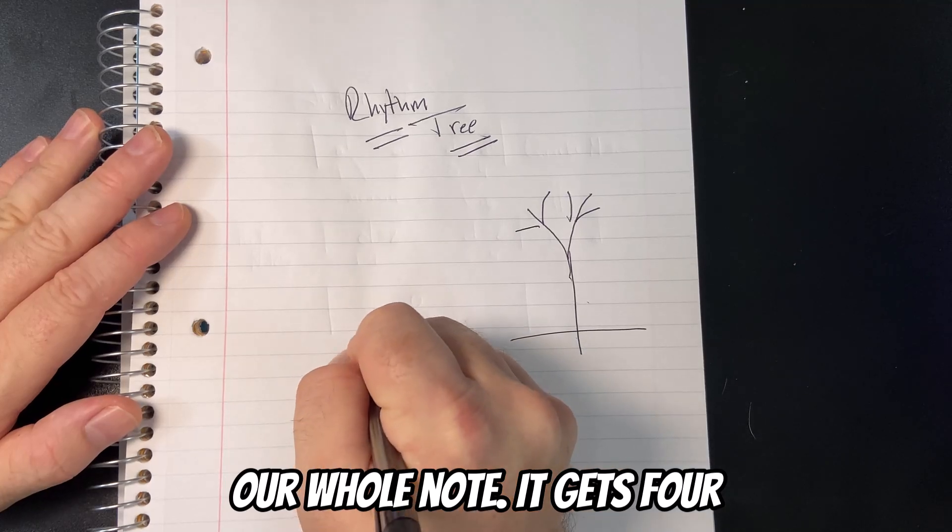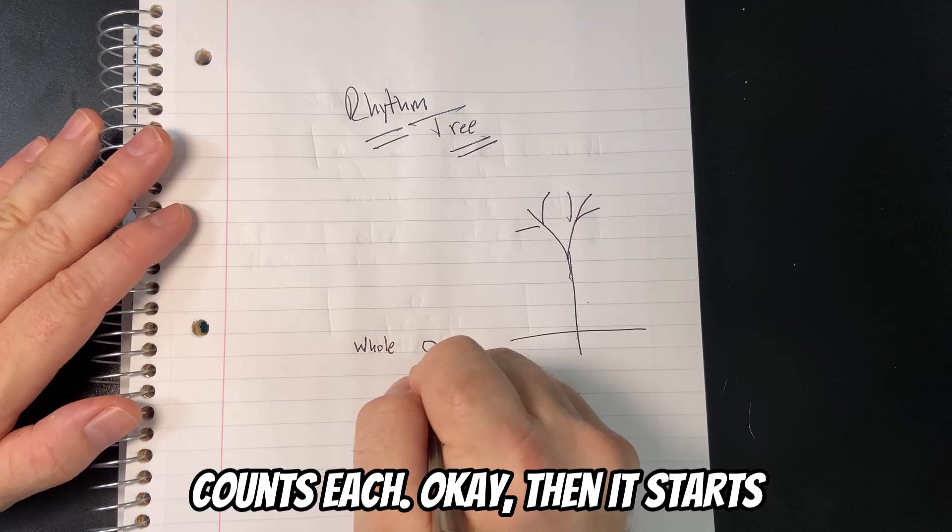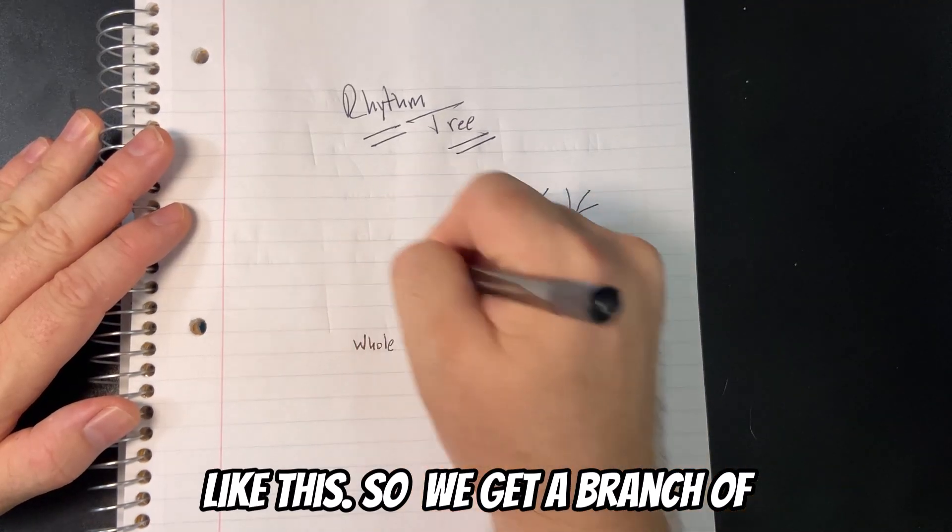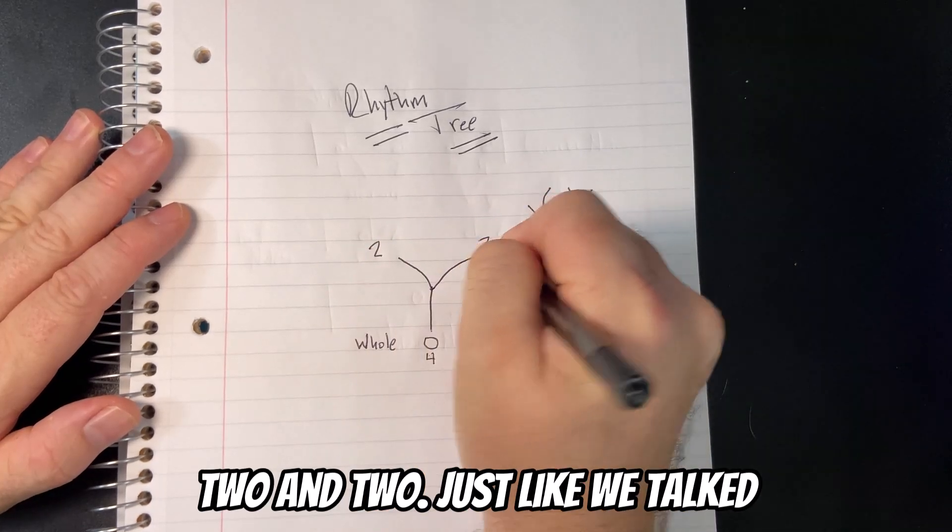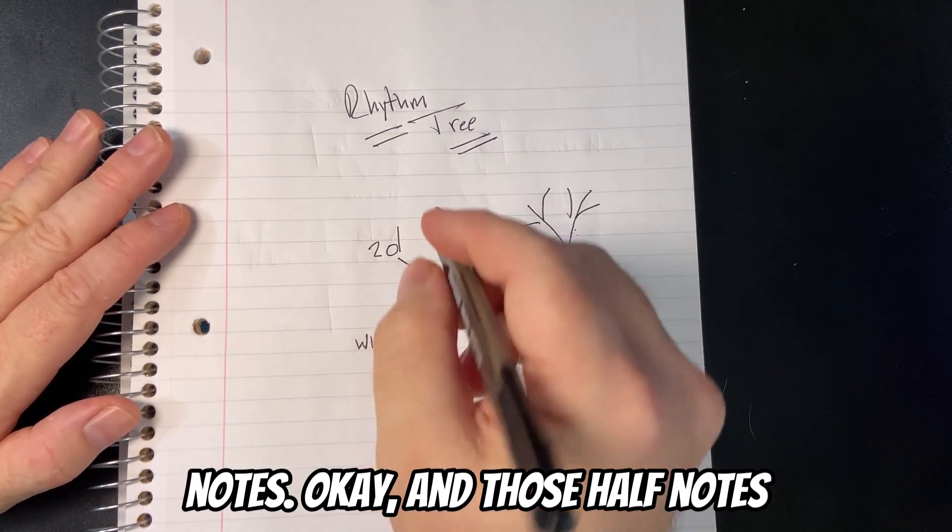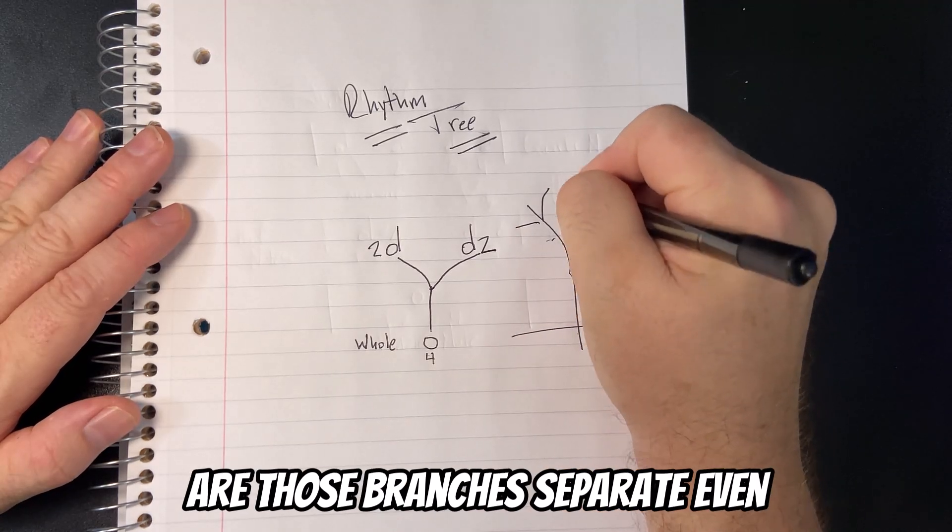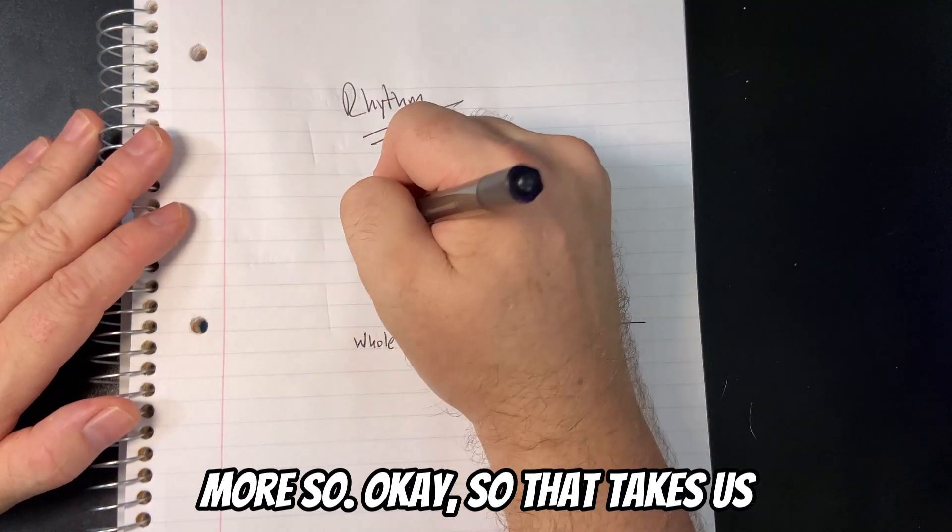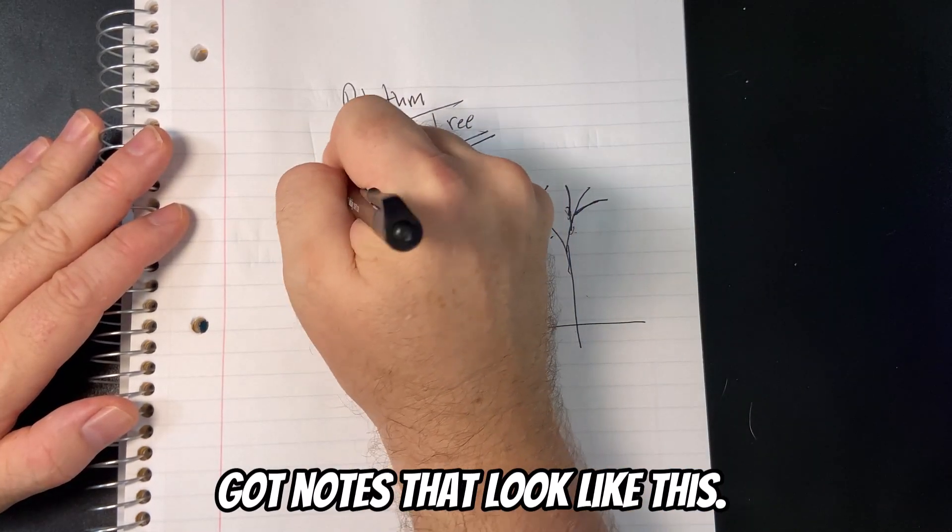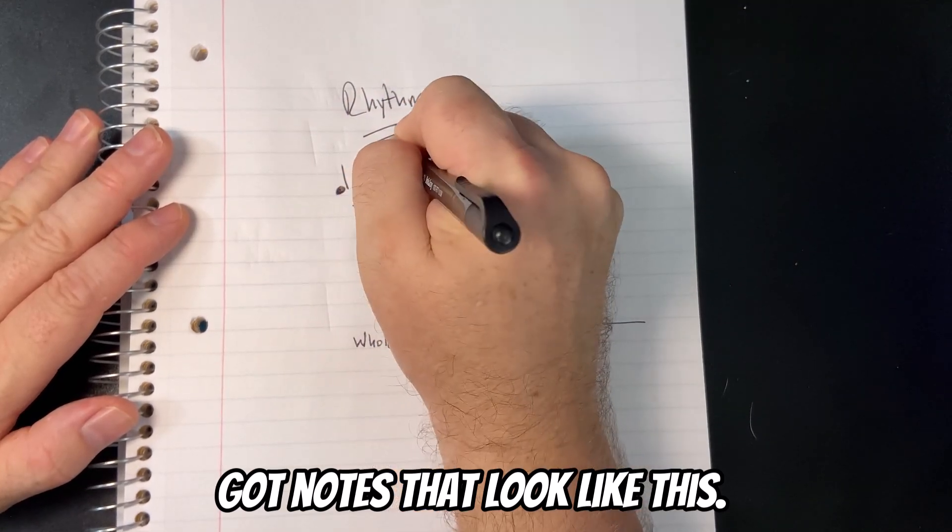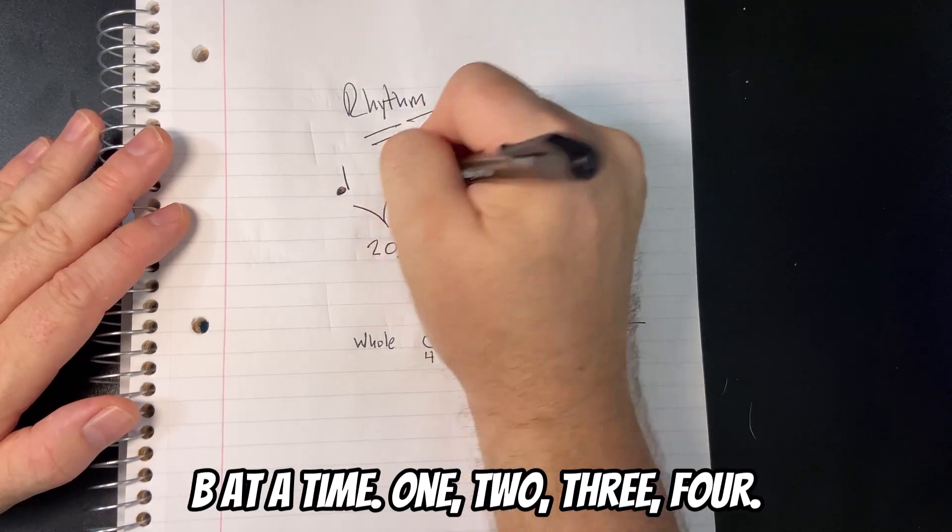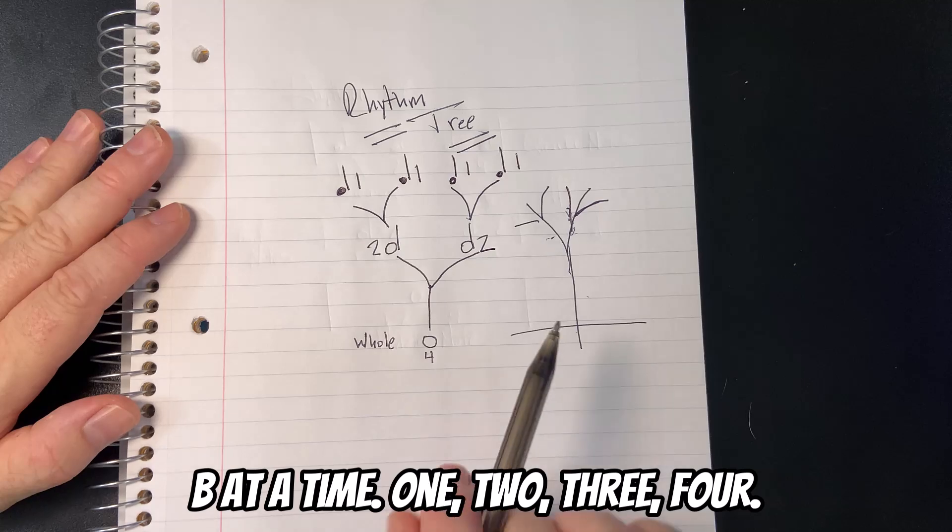It has some bigger branches, and those branches separate even more. That's kind of what we're doing here. You got the ground if you want to visualize that. So we have our whole note. It gets four counts each. Then it starts to build off these branches just like this. So we get a branch of two and two, just like we talked about before. These are our half notes.